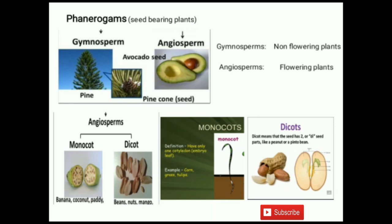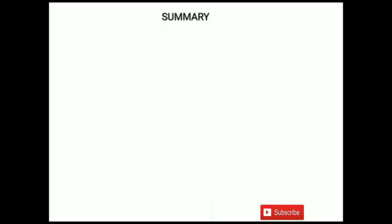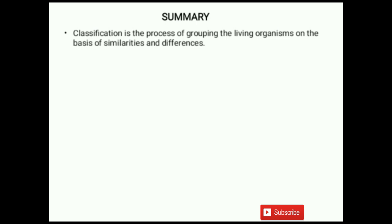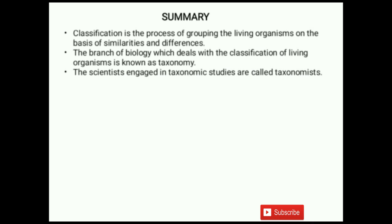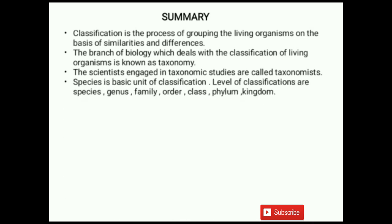This is all about the plant kingdom. Let's revise so you can memorize well. Classification is the process of grouping living organisms on the basis of similarities and differences. Taxonomy is the branch of biology which deals with the classification of living organisms. Scientists engaged in taxonomic studies are called taxonomists. Species is the basic unit of classification. The levels of classification are: species grouped into genus, genus into family, family into order, order into class, class into phylum, and phylum into kingdom.